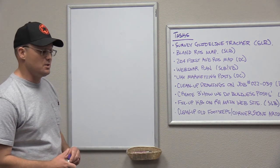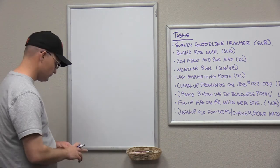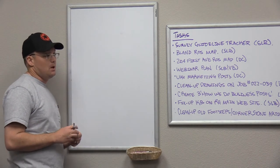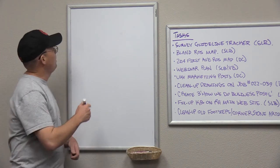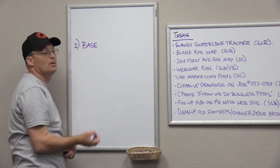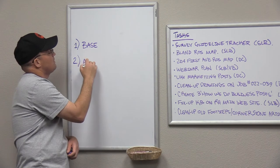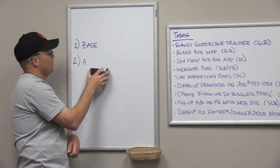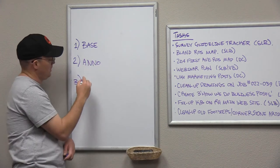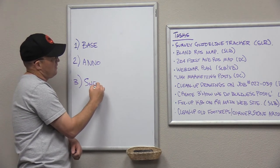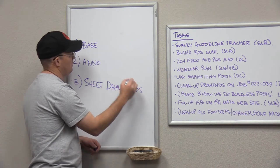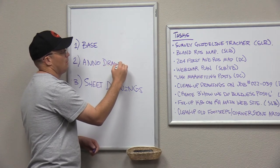We basically group our drawings into three broad categories. The first category is what we call base drawings. The second category is what we call annotated drawings, or anno drawings for short. And the third category is what we call sheet drawings. I'm going to explain what each of those are and then walk through a couple of examples.